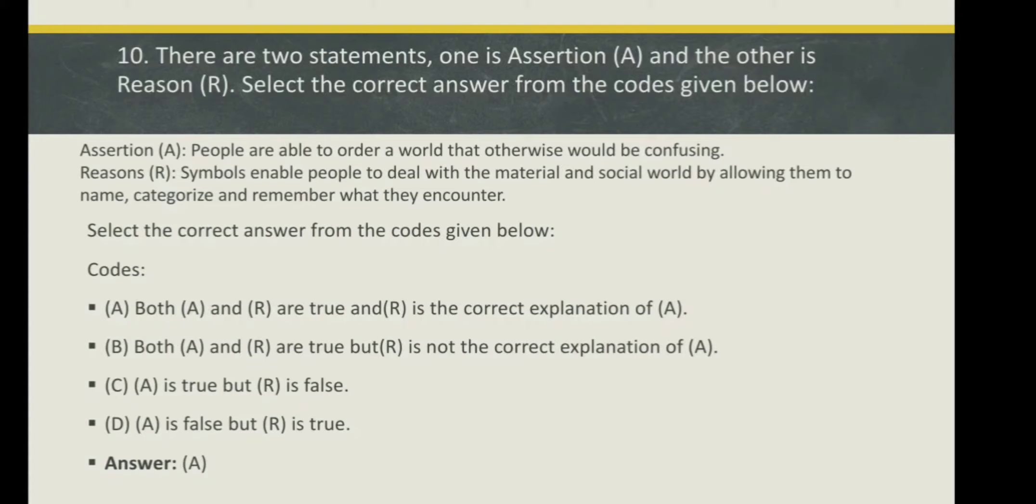Option D: A is false but R is true. Here the correct answer is Option A: Both A and R are true and R is the correct explanation of A.